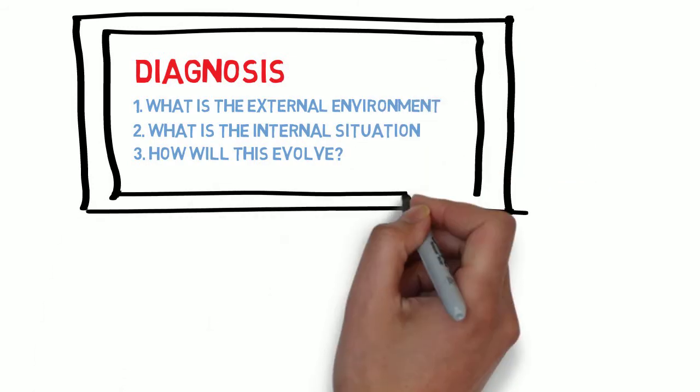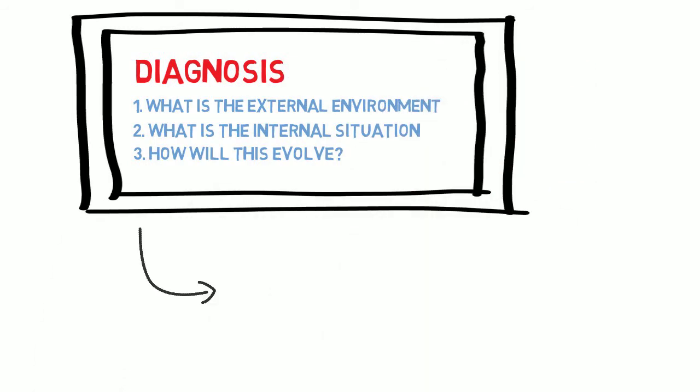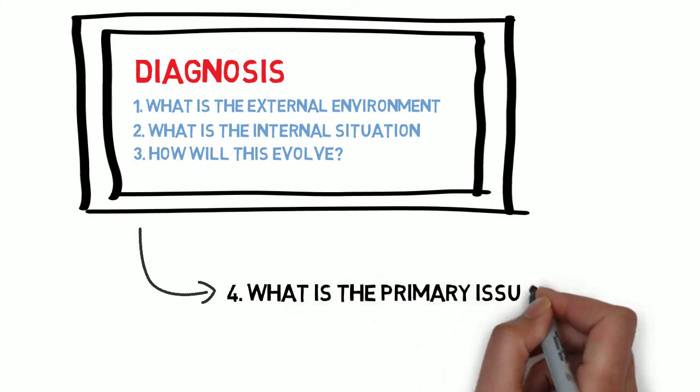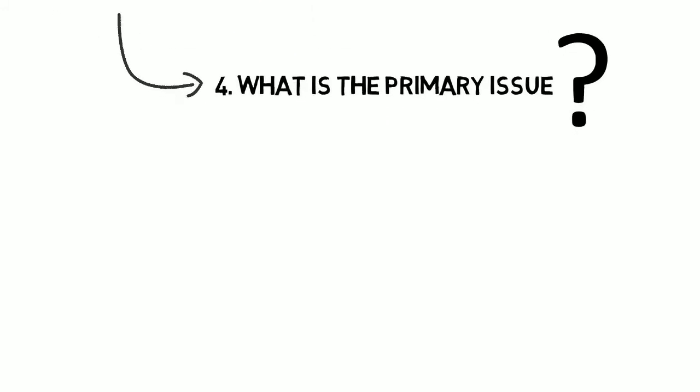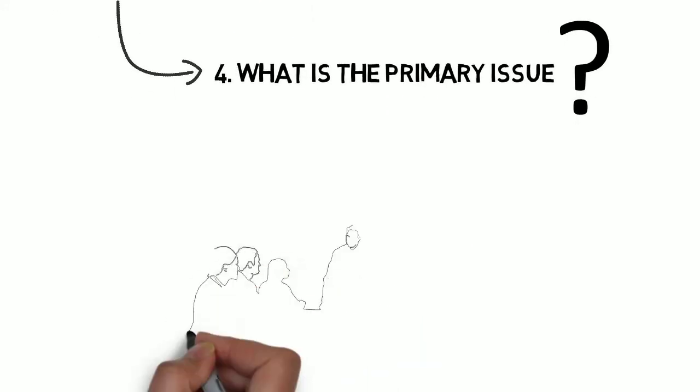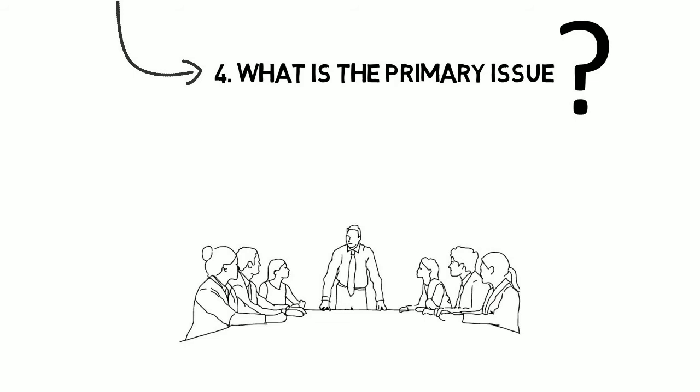These three questions give us a diagnosis of the situation so that we can now ask our fourth question, what is the primary issue? Making sure that your strategy addresses the primary issue is important because people often disagree on what it is and what the options are that need to be considered. For example,